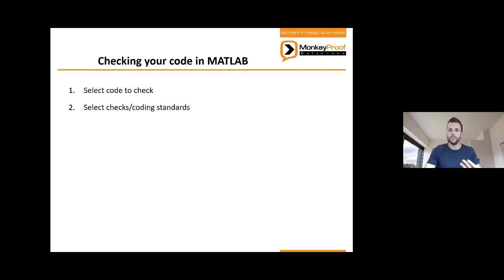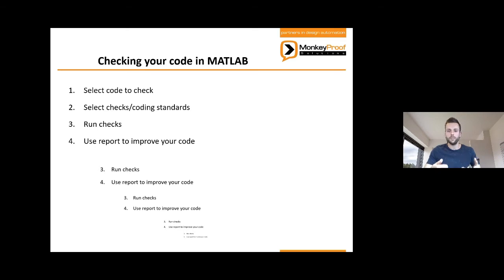There's a mapping between the checks of the code checker and your coding standards. You can configure the checks so that they reflect your coding standards accurately. After that you run the checks, your code is analyzed, and an HTML report is generated. You can use the report to improve your code in an iterative process — improve your code, see what violations are left, until you're satisfied. The code checker does not check everything; we cannot determine whether your functions have meaningful names, but over 70 other things can be checked.